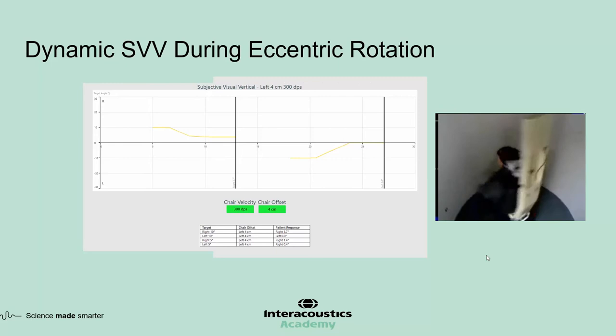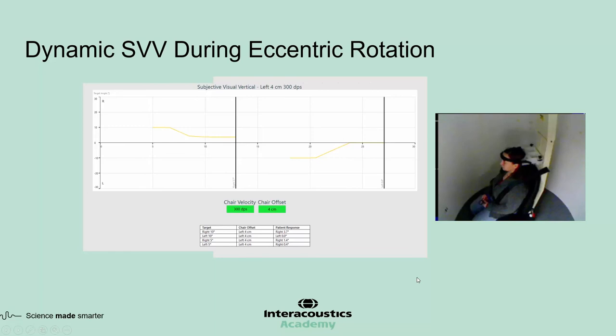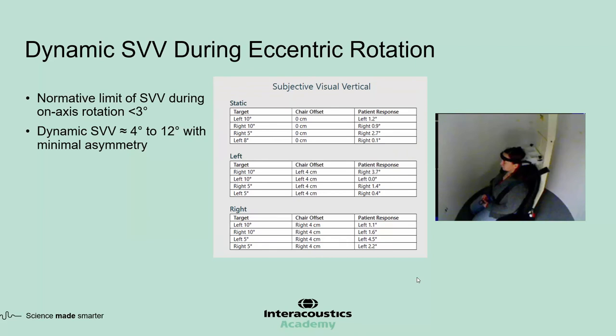Once the patient reaches the final velocity of 300 degrees per second, she is rotated at this velocity for an extended period to ensure canal responses completely subside and responses are confined to the otoliths. She then performs the SVV test while the chair is rotating, gradually adjusting the bar's alignment until it feels vertical. The test is repeated for different initial alignments and directions. Normative values for on-axis rotation are about 3 degrees; for dynamic testing, about 4 to 12 degrees, with minimal asymmetry.